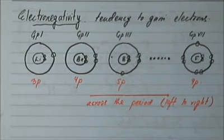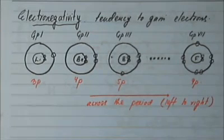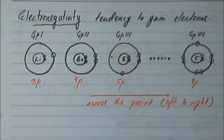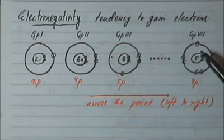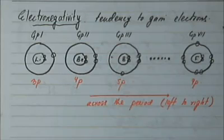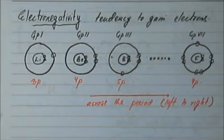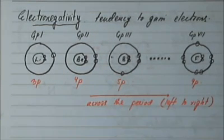In this lecture we're going to study electronegativity. The term electronegativity simply means a tendency for atoms to gain electrons or to pull electrons towards themselves.